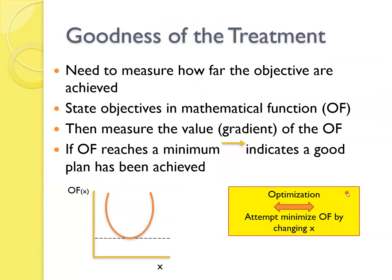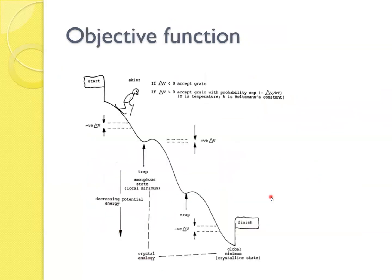So what is the pattern treatment plan? The need to measure how far the objectives are achieved, state objective and mathematical functions, then measure the value of the gradient. If the object function reaches a minimum, indicate a good plan has been achieved. And this is how it works. The sky coming down, and it could trap in these portions. And this is what happened in IMRT.